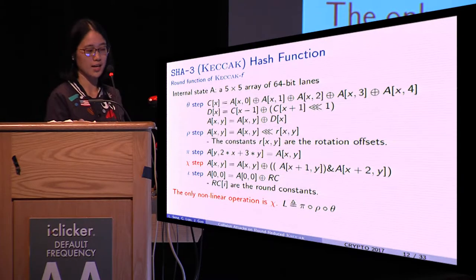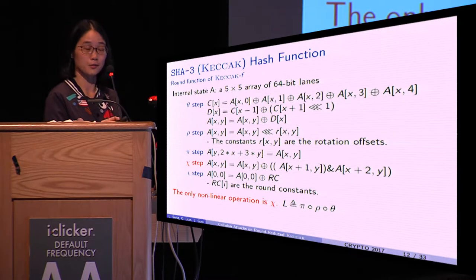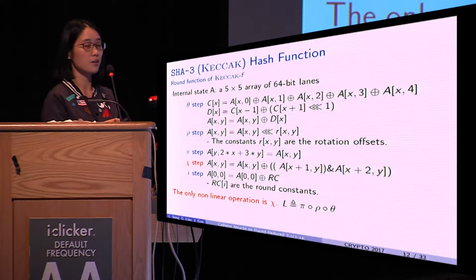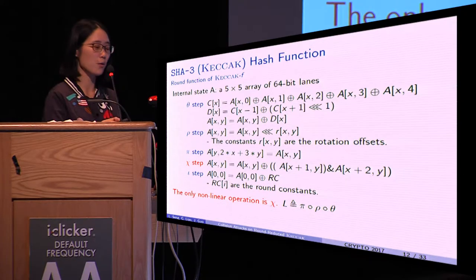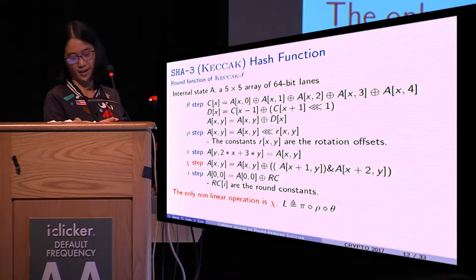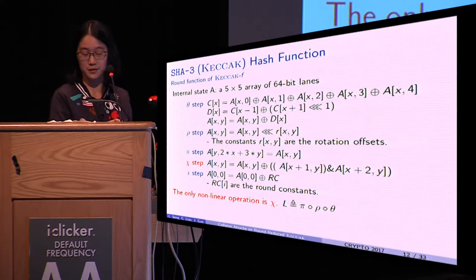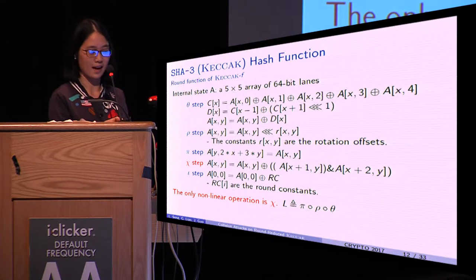Suppose the internal state is a 5×5 array. Then the round function can be described in this way. Keep in mind, chi is the only nonlinear operation, and we define the composition of theta, rho, pi to be L.